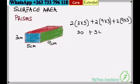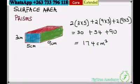Then we simplify. Here is 30, here is 54, here is 90. Then we add, this would give us 174 square centimeters since this is surface area.